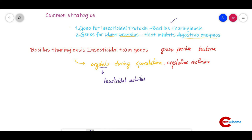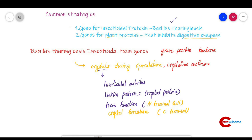The crystal protein has insecticidal activities and is 130 kilodaltons in size. The toxic function is localized in the N-terminal half of the protein, while the C-terminal half is involved in crystal formation — C for crystal formation, N for toxic. There are 18 groups of crystal proteins, with four main groups: Cry1, Cry2, Cry3, and Cry4.